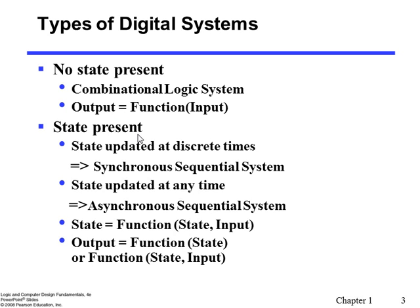On the other hand, the sequential system has a state, which means something that happened in the past determines the current output as well. In terms of function notation, the output is a function of state — something remembered in the system — as well as the current input. That is a sequential system.